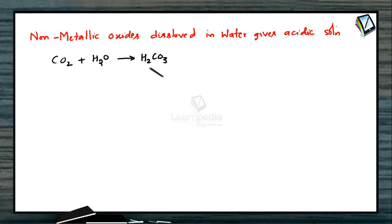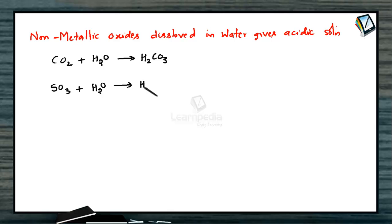Carbonic acid has an acidic nature. Another nonmetallic oxide, SO3 (sulfur trioxide), when dissolved in water, forms sulfuric acid, which is also acidic in nature. So these nonmetallic oxides, when dissolved in water, form the corresponding acidic solutions and come under nonmetallic oxides.